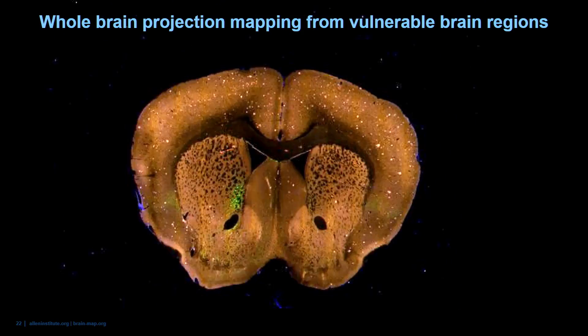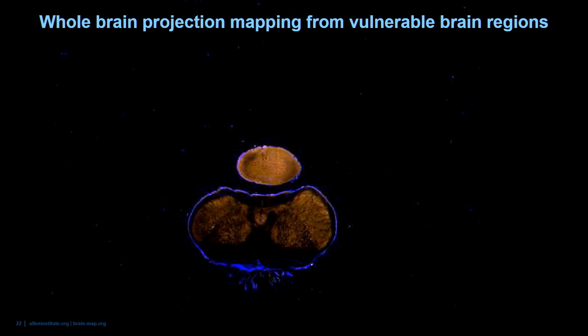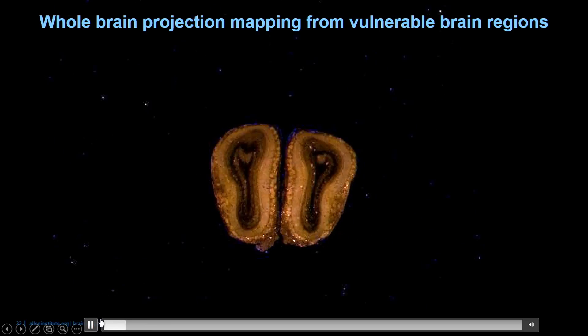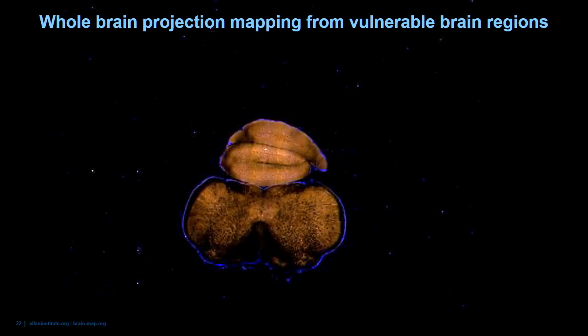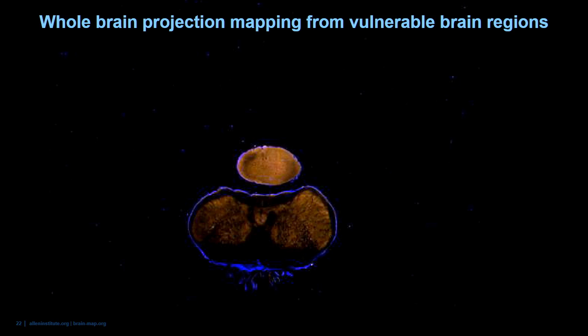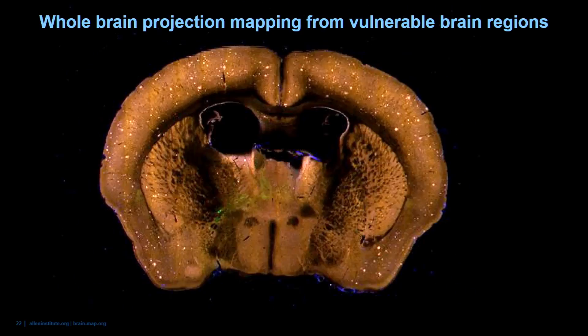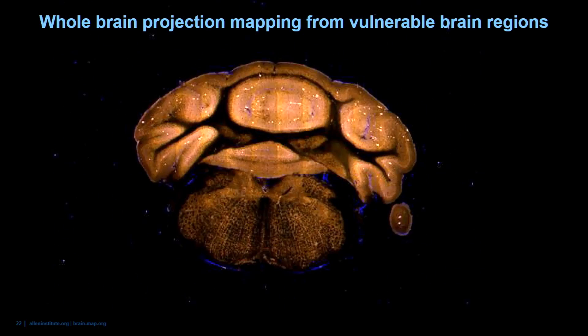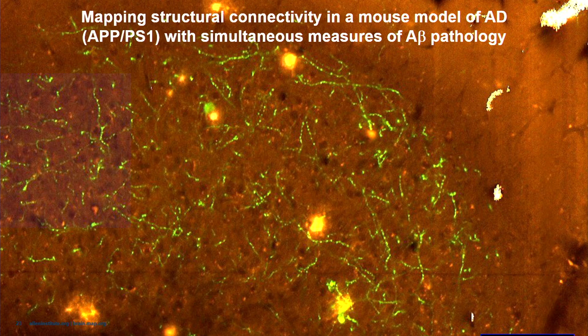The second aspect of this project is to look for structural alterations in connectivity specifically in an Alzheimer's mouse model. This is an injection of the AAV tracer into the orbital cortex from an APPPS1 mouse model of Alzheimer's disease. We can apply the same platform to label projections brain-wide, and the 'starry sky' appearance here is due to a dye able to cross the blood-brain barrier and label all of the amyloid beta deposits in this particular mouse. We can thus collect images simultaneously of labeled axons as well as amyloid beta pathology, with a zoom showing the plaques and surrounding dystrophic neurites.